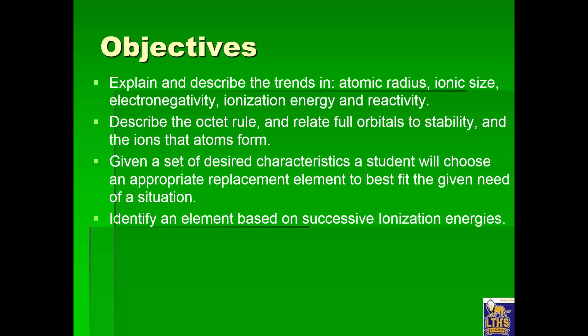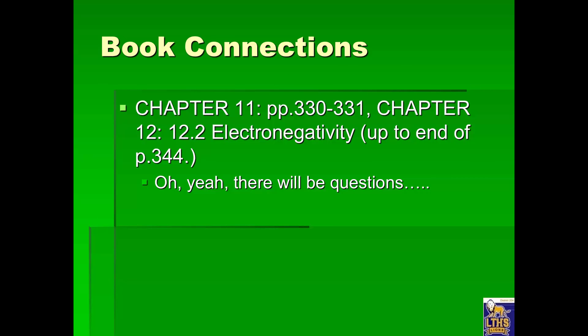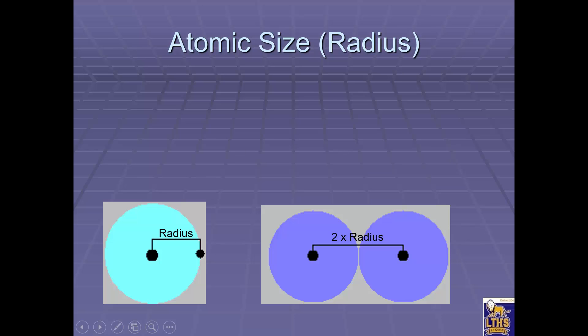So we need to look at atomic radius, ion size, electron magnitude, ionization energy, and reactivity. We're going to do these four objectives, so get ready and let's go. Make sure you read chapter 11 and chapter 12, section 12-2, up to the end of page 344. There will be questions.